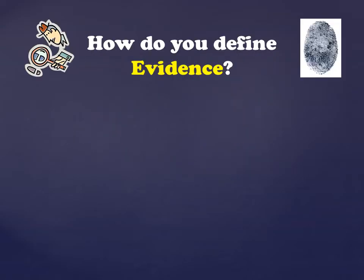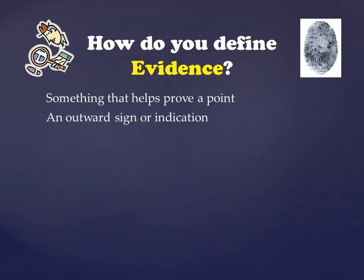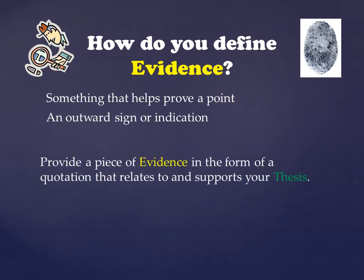So let's talk about what evidence is. How do you define evidence? It's something that helps prove a point, and it's an outward sign or indication. What you want to do when you're writing your literary analysis paper is provide a piece of evidence in the form of a quotation that relates to and supports your thesis. And your thesis, remember, is just the question that you're trying to answer.